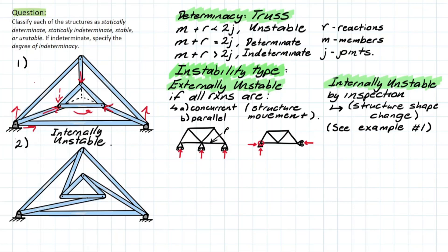For the second problem, I picked a very similar structure type. However, now the connecting members to this internal shape are not going to create a concurrent point acting at the center. That means we can actually proceed with some determinacy checks. If we write down our equation, we have m plus r, and then we have to check whether it's less than, equal to, or greater than 2j.